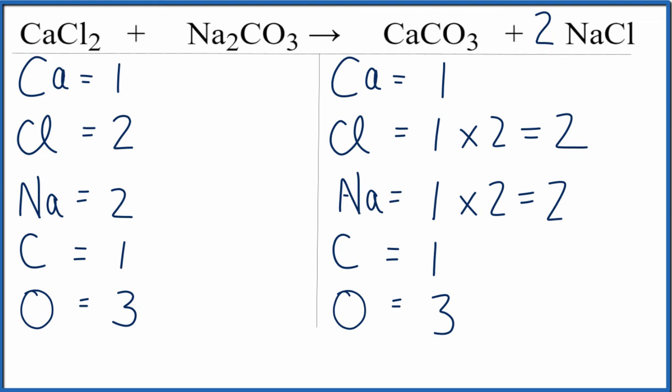And now everything is the same on both sides of the equation, and it's balanced. So that's the balanced equation for CaCl2 plus Na2CO3 yields CaCO3 plus NaCl.